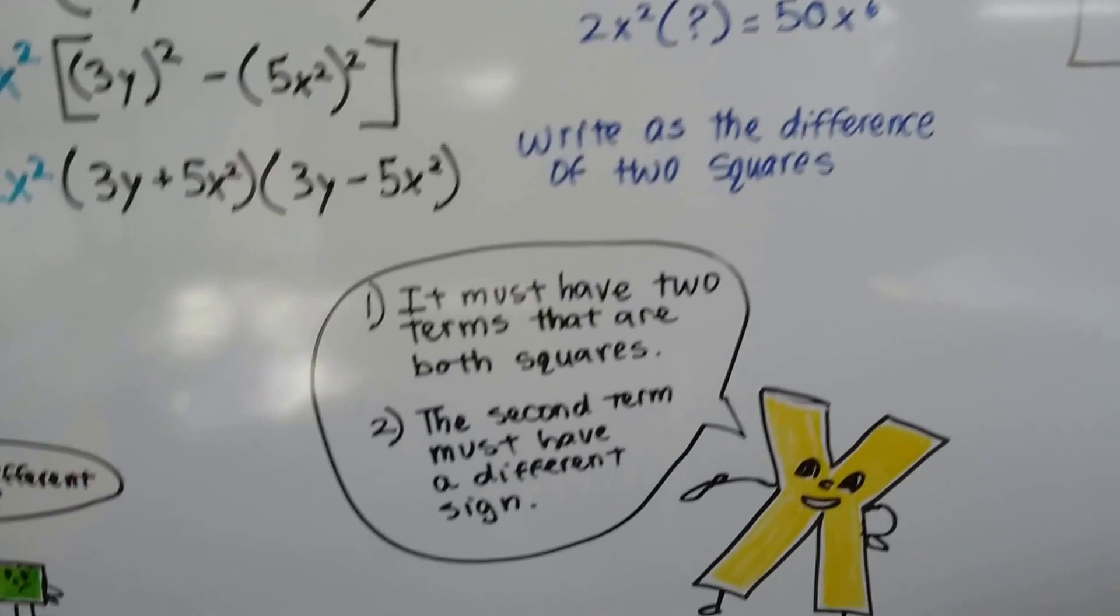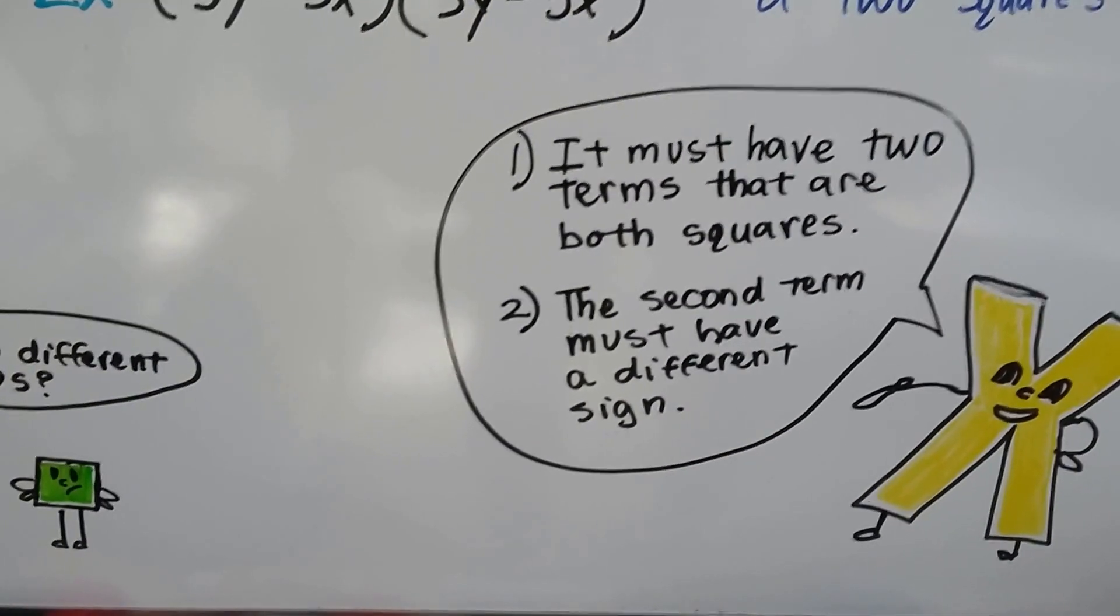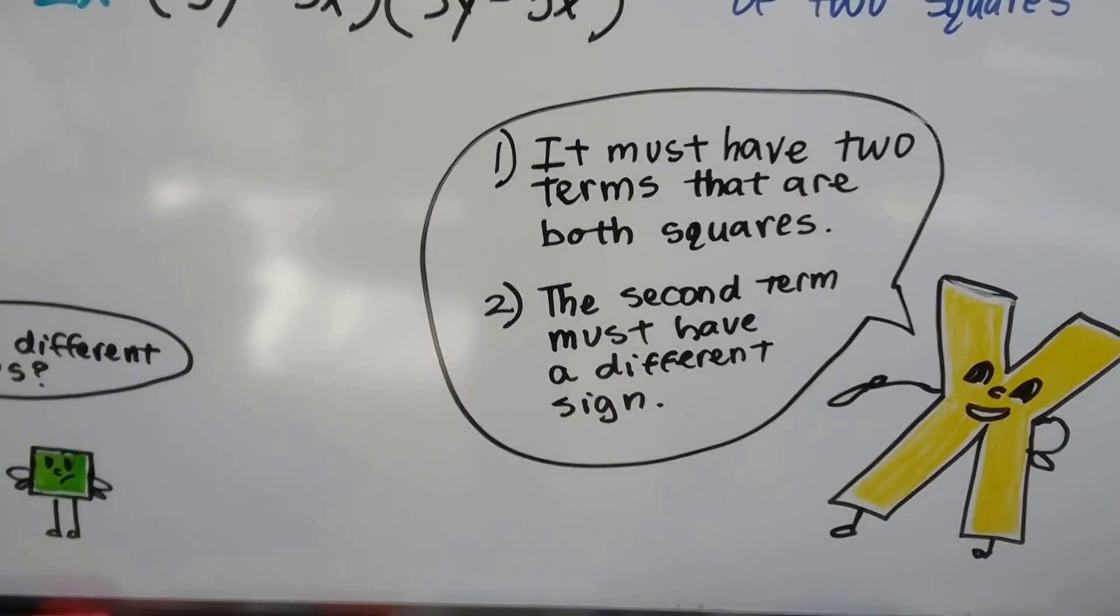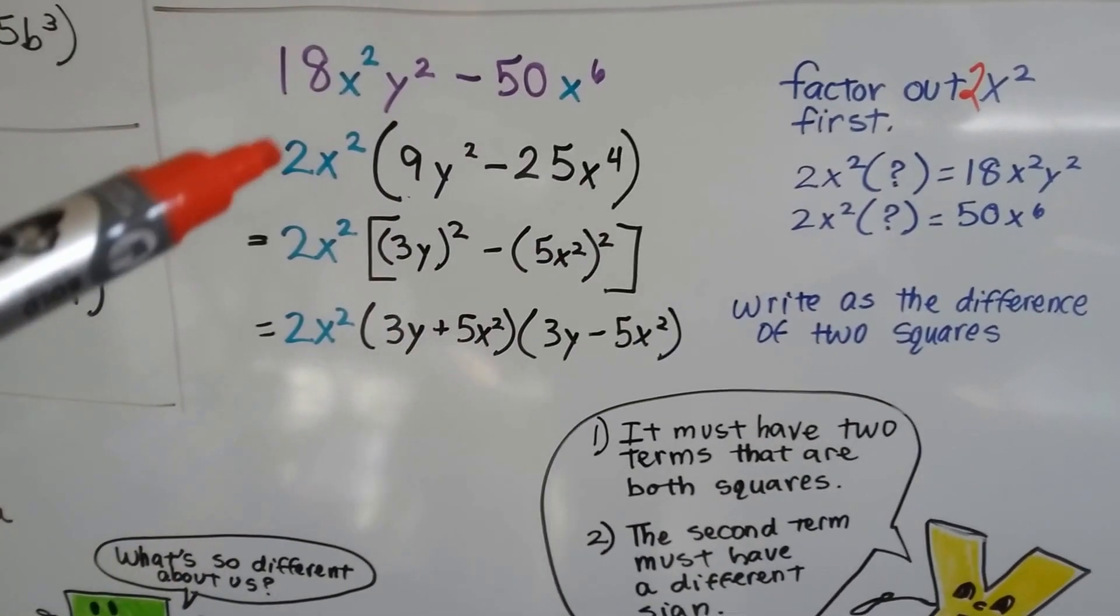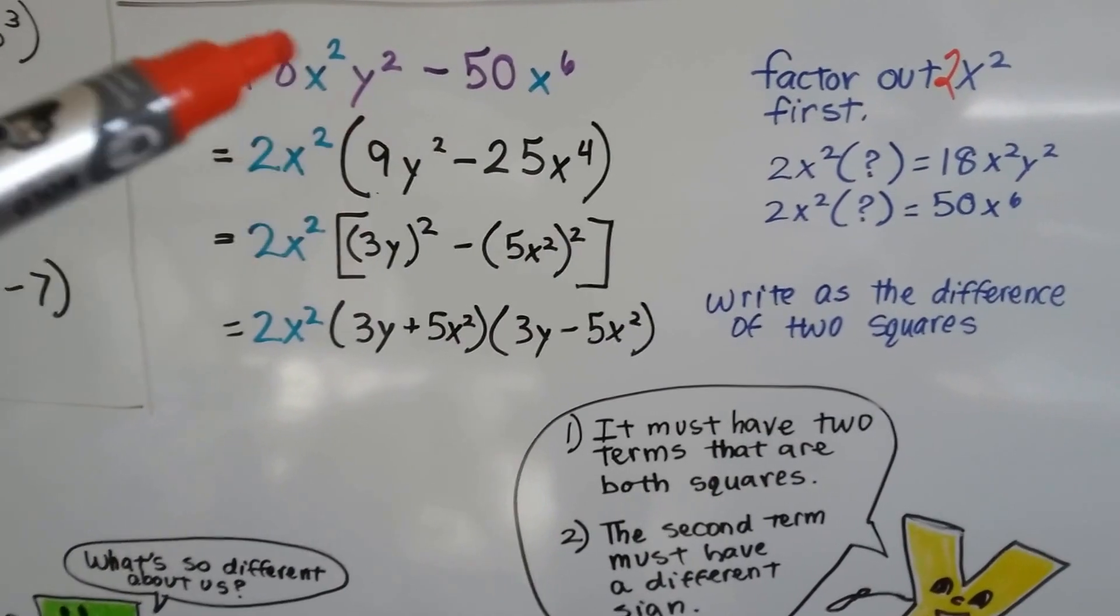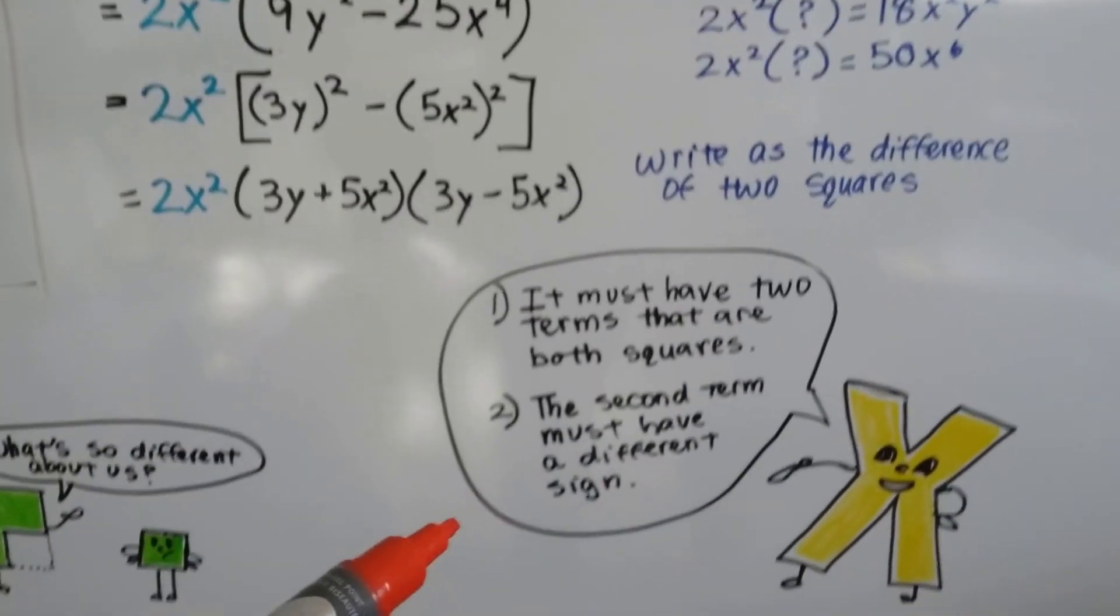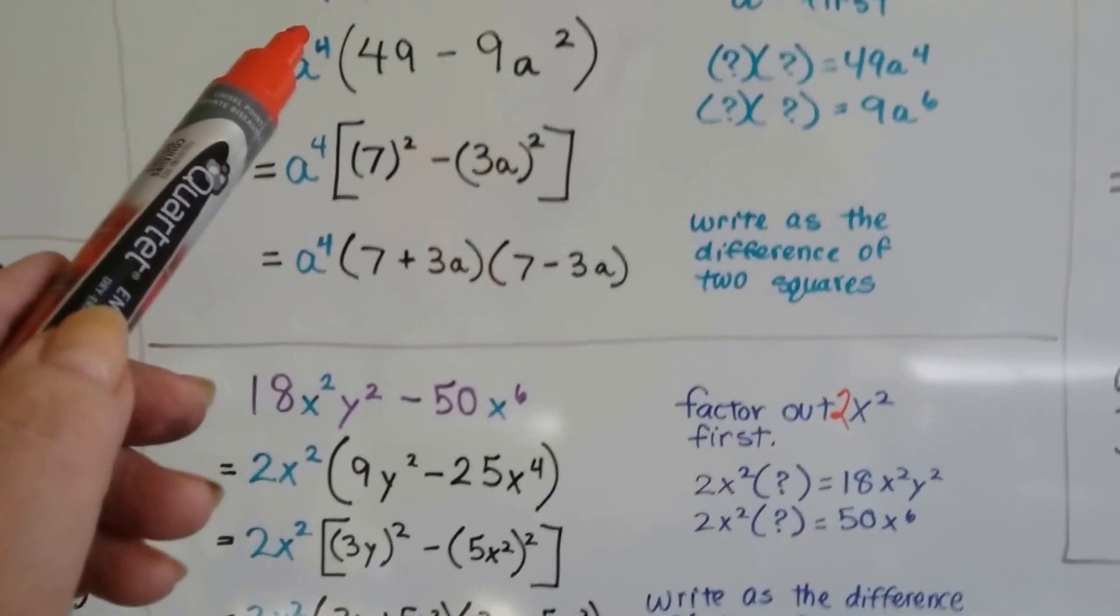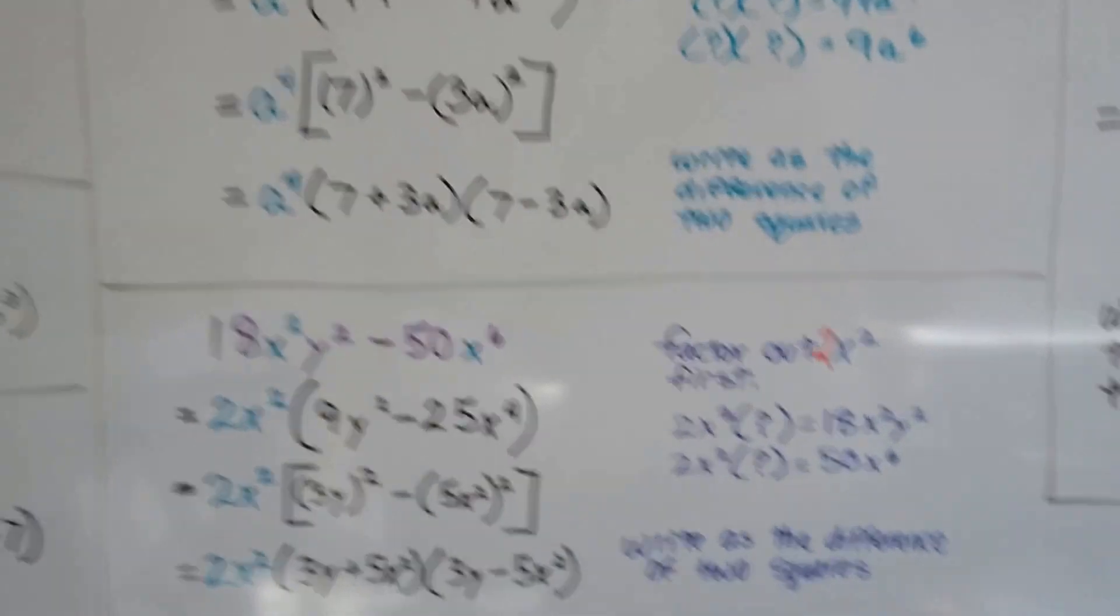So remember, the conditions that we need for this to work: the first one is, it must have two terms that are both squares. And if they aren't, then we can factor out like a 2 or a 3 or a 4, whatever, to get it to that point like we did here. Now we can do 9 and 25. Or if it's already got them, we just do it. 49 is 7 times 7, that's 3 times 3.